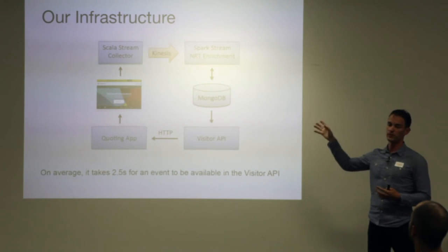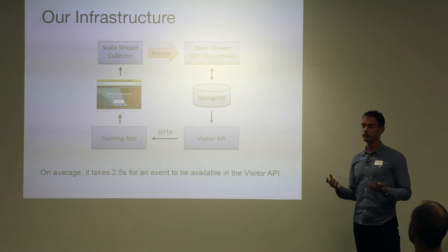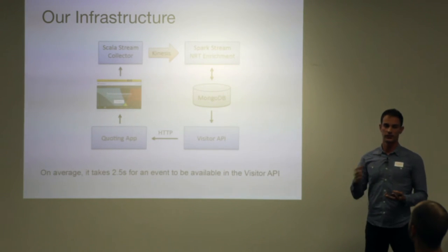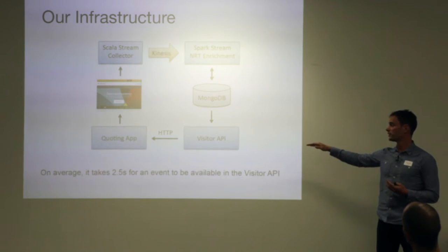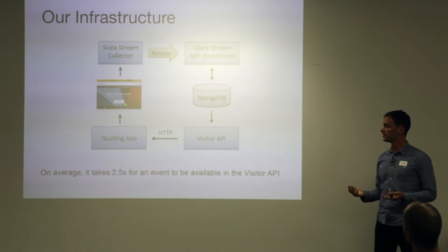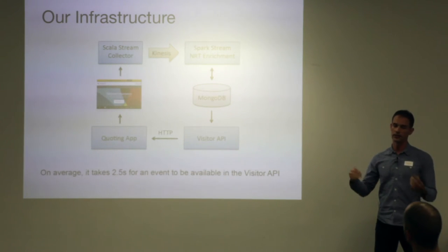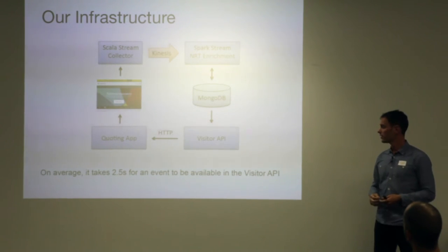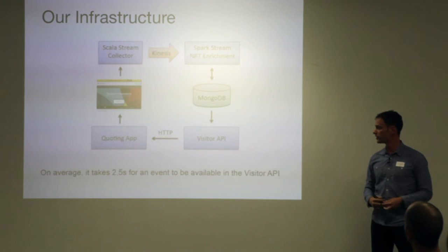We use MongoDB because the main app also uses MongoDB, not for any other reason. We treat MongoDB as a cache for all active sessions. Then we put an API on top of it that queries it and returns an answer. In our case, the query would be: has this user started the journey through the radio landing page? The whole process might look a bit complicated, but it just takes on average two and a half seconds for data to be available in this visitor API.